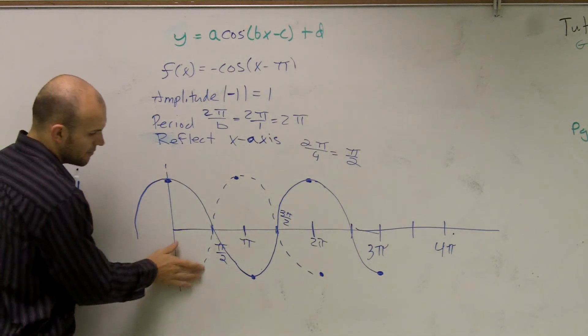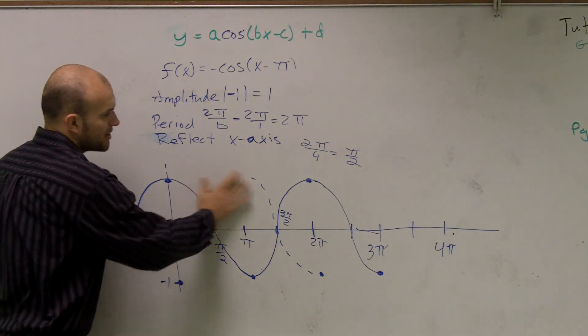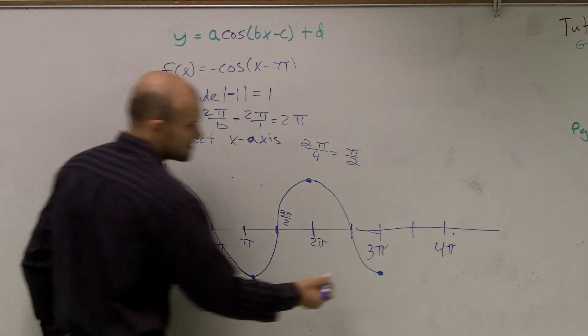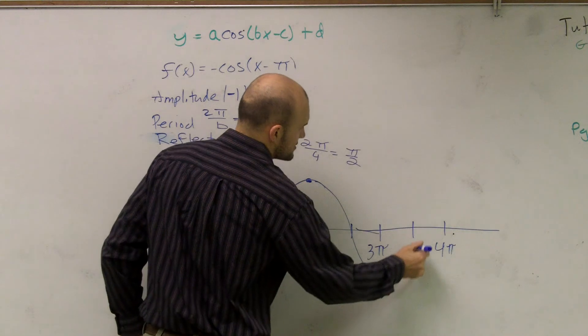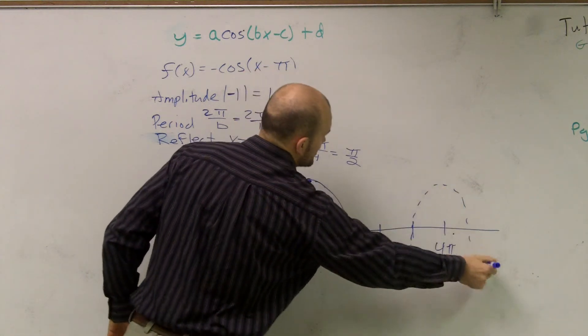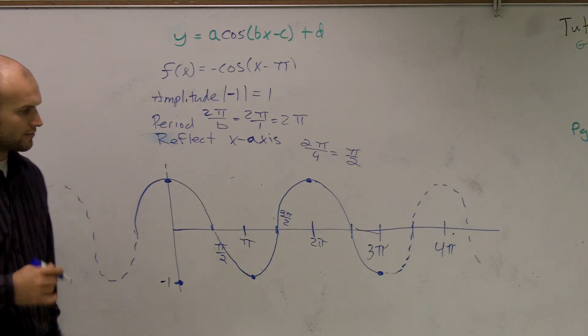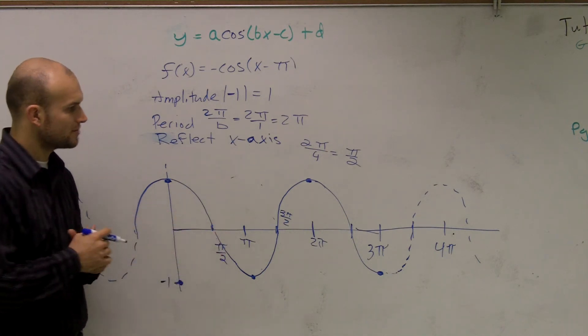And then what we can do is erase really our paragraph. I just use the paragraph to kind of show you guys how to find the rest of them. But just remember this graph infinitely continues to go into the left and right. We're just graphing the two periods.